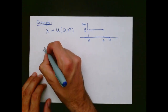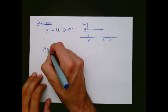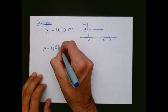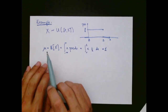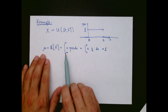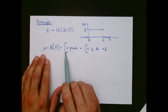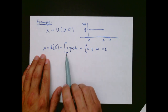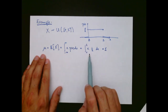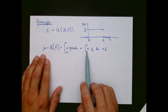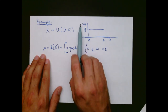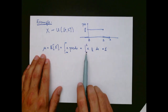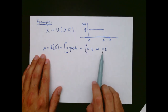The mean of x is the expectation of x. Because x is continuous, the mean is the integral from −∞ to +∞ of x times p(x), which in our case is the integral from 0 to 2 of x times one-half, since the probability density is one-half everywhere in that interval. Carrying out that integral gives one.